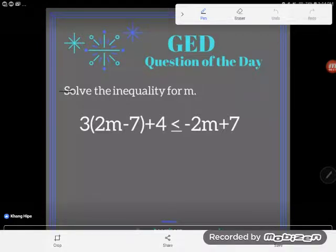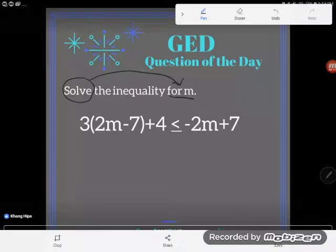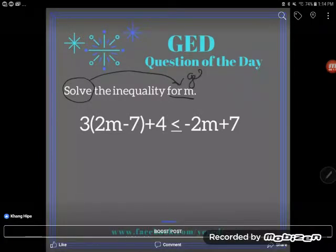Let's take a look and read the directions. It says solve the inequality for m. So if I say solve for m, let's start with that part. What I'm saying is get m alone. Get m alone on its side.